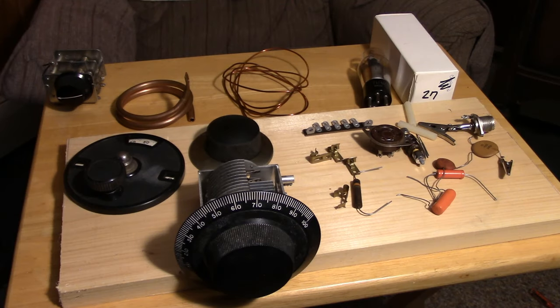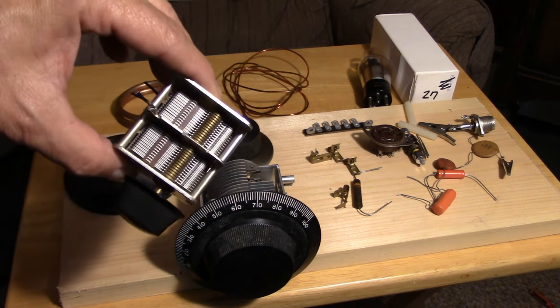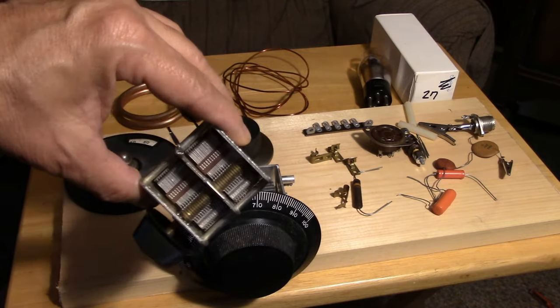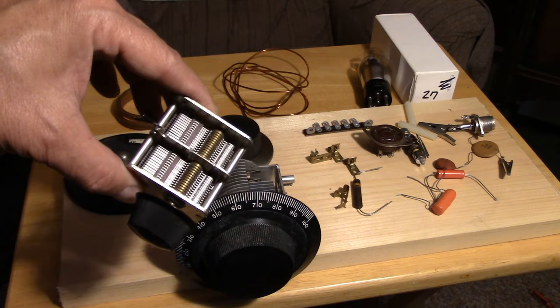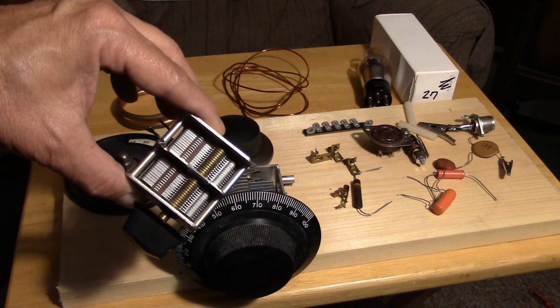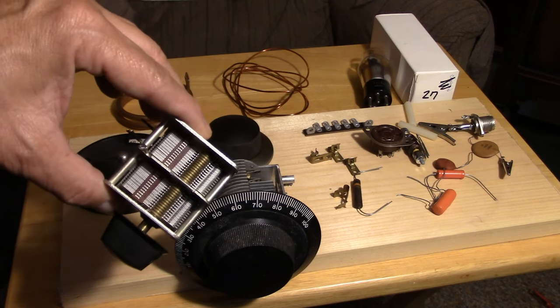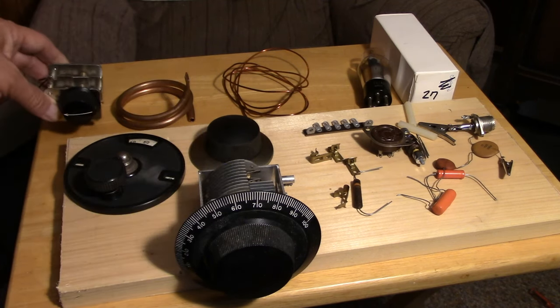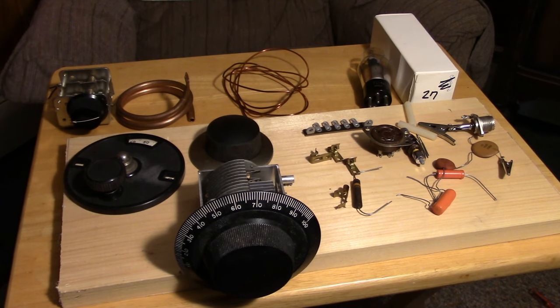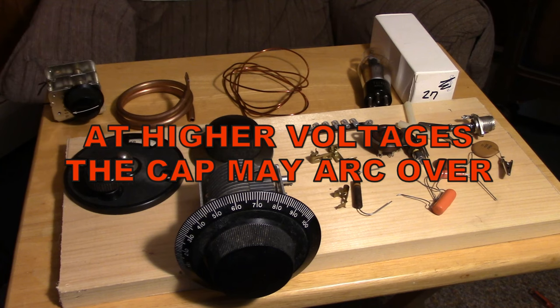I showed you a regular receiving variable as the basis for the oscillator. A single section, 365 puff cap will get you started, and the Hartley will tune fine. The problem is these smaller capacitors are not as stable as larger, chunky capacitors used for transmitting operation. Their plate spacing is very close. Now, at this very low power level of the 27 tube, especially if you start the oscillator around the 150 to 200 volt region, you will be able to have a capacitor like this work for you, and you can get started with the oscillator and make contacts.